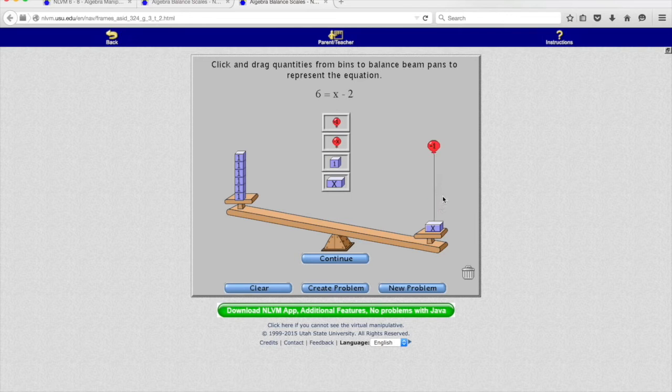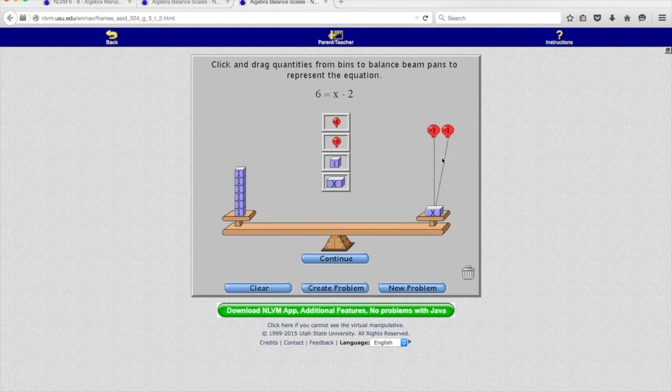So if I put two balloons out here, it's basically counteracting the weight of two blocks and it evens out my balance scale. So something minus 2 is equal to 6.